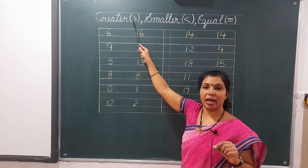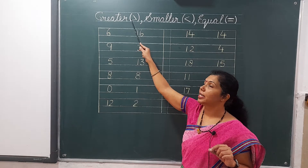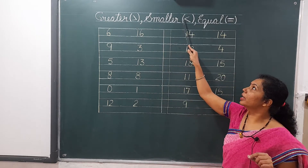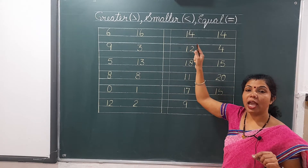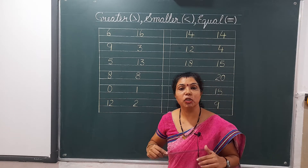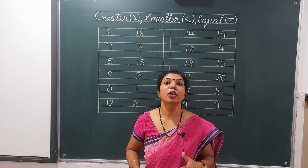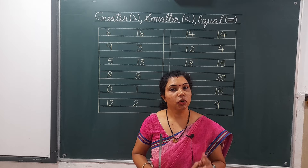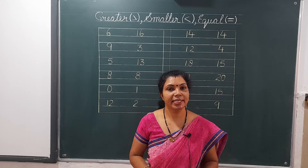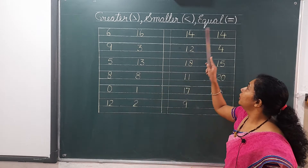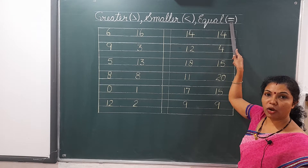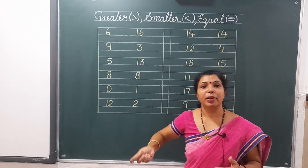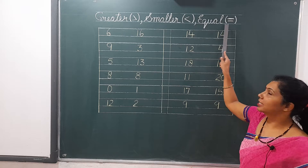Badae ke liye yeh sign hoga, or chotae ke liye yeh sign hoga. Jab hum bada number dekhenge, toh bird ka peak, yani yeh jo mouth hai, yeh khula rahega. Or smaller ke taraf yeh mouth band rahega. And we will also get numbers which will be equal. Apas mein barabar honge, same honge. For that, we will use the equal sign.